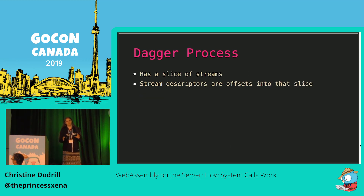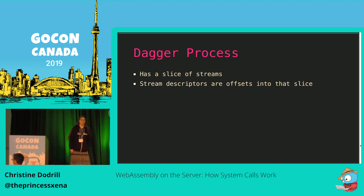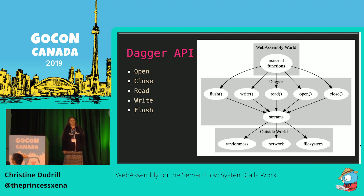Conceptually, Dagger has individual processes, which are basically a superset of a WebAssembly virtual machine that also has a slice of streams, akin to how the Linux kernel has a slice of file descriptors in every process. Stream descriptors are offsets into this slice, and they're used in place where Unix and Linux would normally use a file descriptor. There's only five calls: opening a stream, closing a stream, reading from a stream, writing to a stream, and flushing any asynchronous data to the other side.